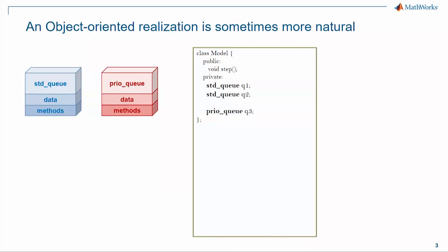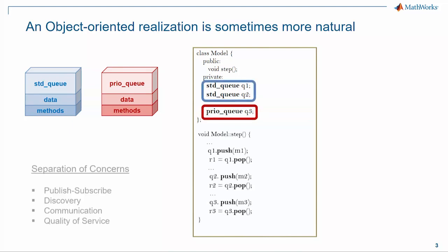As an example, you could take an application that has multiple queues and different implementations of queues. When you're designing that and writing code for it, you could simply instantiate three separate queues of two different types. And then when calling into the different methods for those queues, you could do it very naturally. So there are established advantages to object-oriented realization.